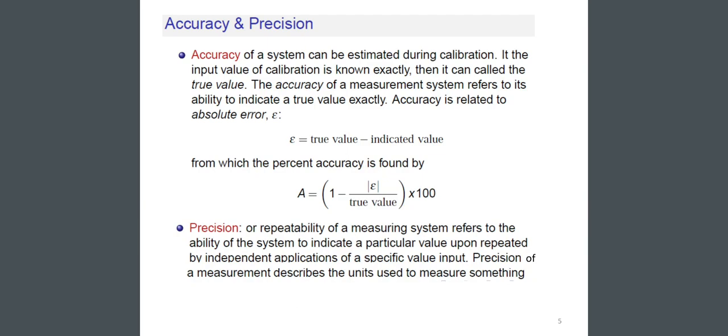Precision: Precision or repeatability of a measuring system refers to the ability of the system to indicate a particular value upon repeated, independent applications of a specific value input. Precision of a measurement describes the units used to measure something.